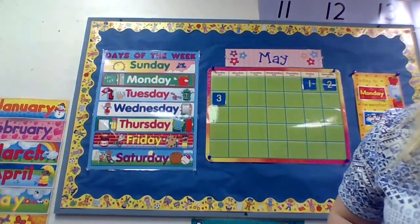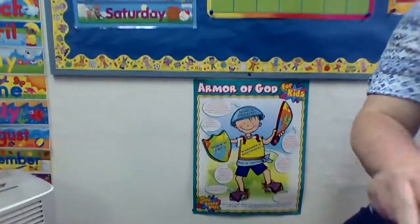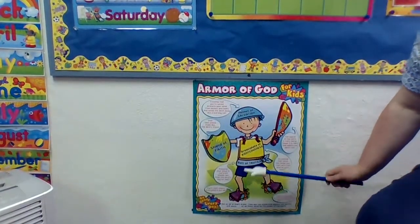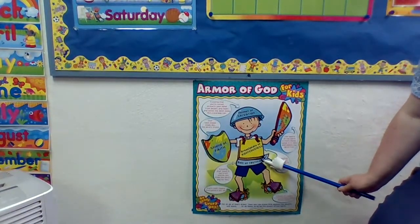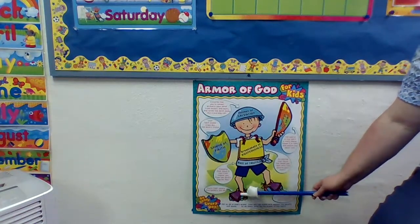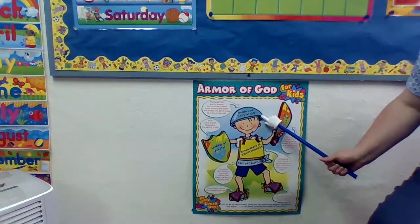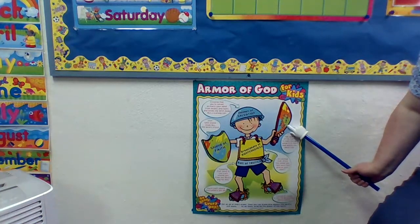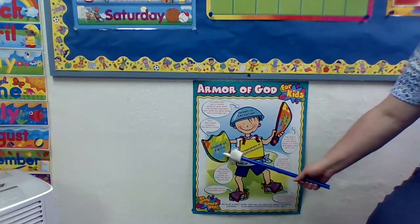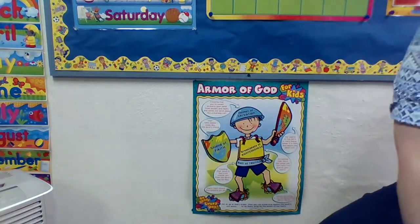Let's get ready to put our body armor on. The breastplate of righteousness, the sturdy bow to truth, the shoes of peace which come from the good news, salvation is our helmet, the sword of the Spirit which is the word of God, and faith is our shield. Be blessed.